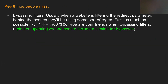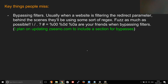Key things people miss: bypassing filters. I've joined old programs and found open URL redirects because people haven't been breaking filters as much as they should be. The beauty of being a bug hunter is it's you and your computer — chuck whatever you want at the web application. It doesn't matter whether it works or not; chuck as many characters and variations as possible. You're going to be learning something and potentially find a bypass useful on many more websites. Fuzz as much as possible.